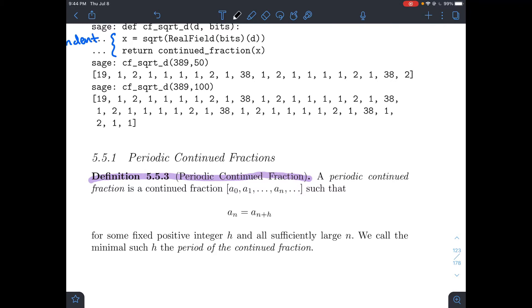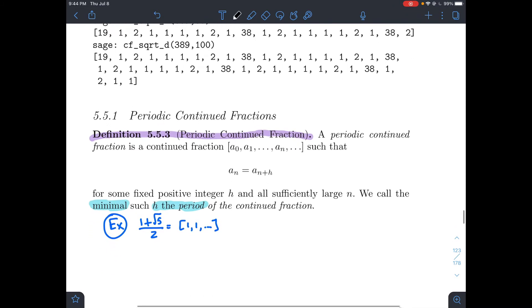The smallest h for which you get a string of numbers that repeats, the smallest or minimal such h is what we'll call the period of the continued fraction. I've got an example we just saw - the golden ratio, 1 plus root 5 over 2.